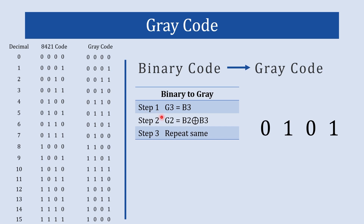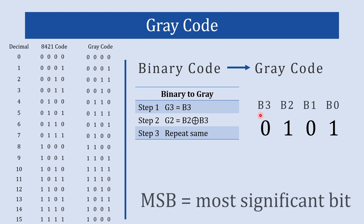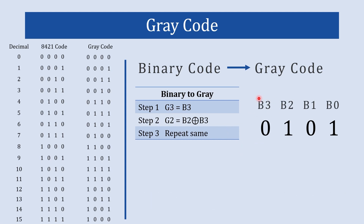In step number 1, you are supposed to place g3 the same as b3. Now, b3 is the MSB of binary code and g3 is the MSB of gray code. So as per step number 1, the MSB of gray code will be the same as the MSB of binary code. We will write 0 here — this will be our g3.